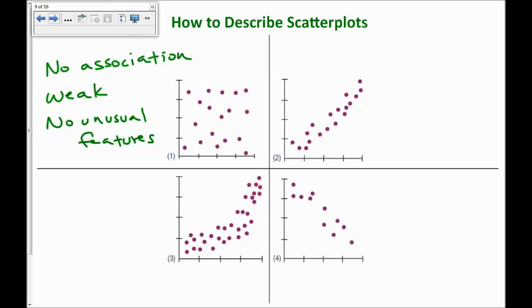In number two, it's a positive. It's linear association. I would consider it strong, and there's no unusual features.